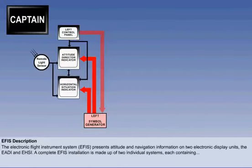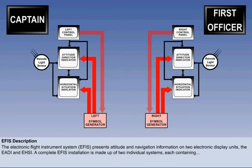A complete EFIS installation is made up of two individual systems, one for the captain and one for the first officer. In the diagrammatic layout here, we can see that each system contains an E-A-D-I, which is the preferred Boeing term. Airbus call it a primary flight display, or PFD. There is also an E-H-S-I, as Boeing call it. Airbus call it a navigation display, or ND.